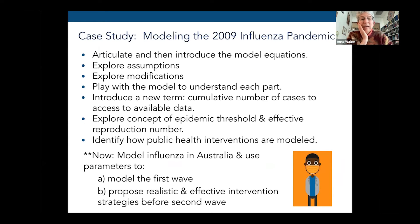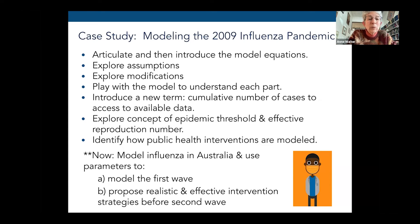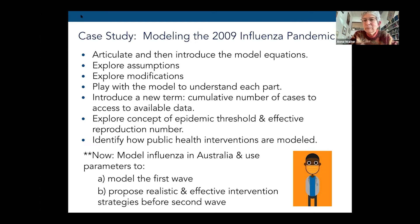Once we've done that guided example, students are ready to jump into a deeper case study — the 2009 influenza pandemic. We introduce the model equations just like we did with the virus, explore assumptions and modifications, play with the model to understand each part, and make sure the math works. We introduce a new term to work with the available data, explore epidemic threshold and effective reproduction number, and identify how public health interventions are modeled. Then students are asked to model the influenza as it happened in Australia in 2009, model the first wave, project the second wave, and propose realistic and effective intervention strategies.